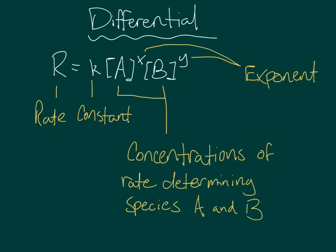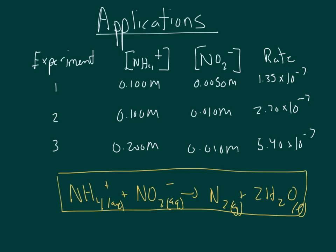Given the rate and the concentrations, the rate constant can be arithmetically determined. Likewise, given the rate constant and the concentrations, the rate can be arithmetically determined. Concentrations and exponents of the expression can be determined experimentally. The rate law can be determined experimentally if instantaneous rates and concentrations of a reaction are found and recorded.